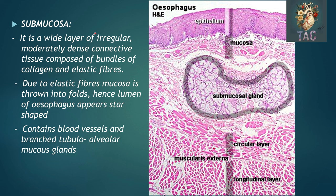Next to the mucosa in the esophagus is the submucosa — a wide layer of irregularly moderately dense connective tissue composed of bundles of collagen and elastic fibers. Due to the elastic fibers the mucosa is thrown into folds, hence the lumen of the esophagus appears star-shaped. It contains blood vessels and branched tubulo-alveolar glands present in the submucosa, called the esophageal glands proper. In addition, another type of glands is present near the pyloric end of the esophagus in the lamina propria.